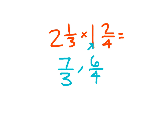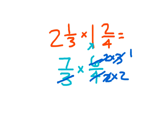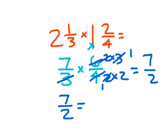And remember, I'm multiplying using a common factors approach. I see 3 here, and I know that 6 is 2 times 3, so I can cross out one of the 3s and put a 1. I see a 2 here, and I know that 4 can be written as 2 times 2, so I can cross one of those out as well. 1 times 2 is 2, and 7 times 1 is 7. So 2 and 1 third times 1 and 2 fourths is 7 halves. 7 divided by 2 goes in there 3 whole times with a remainder of 1. 7 halves is equal to 3 and 1 half.